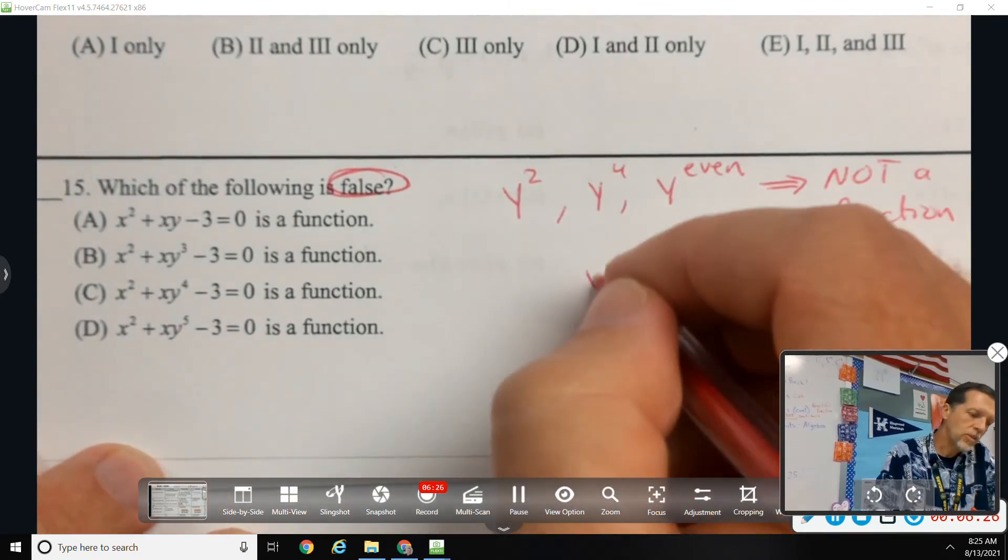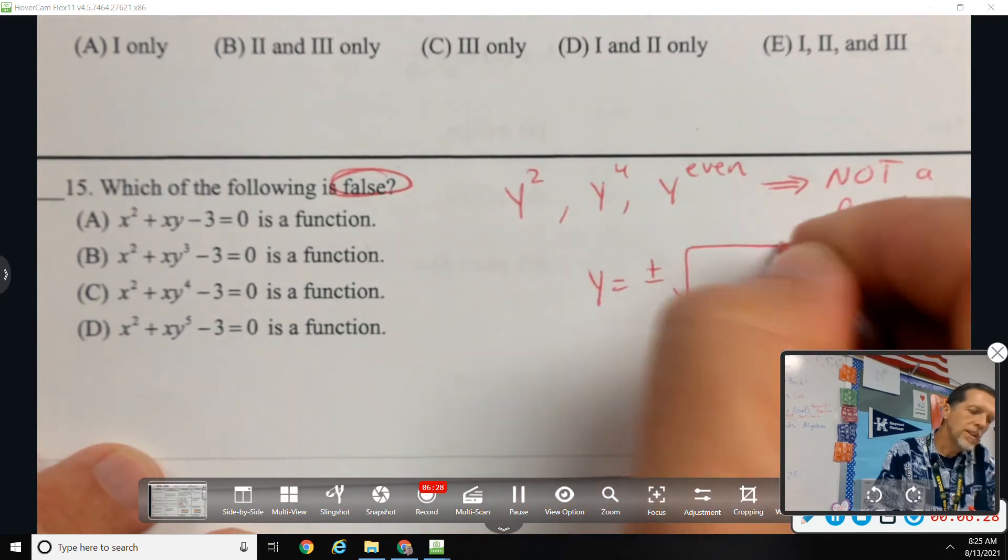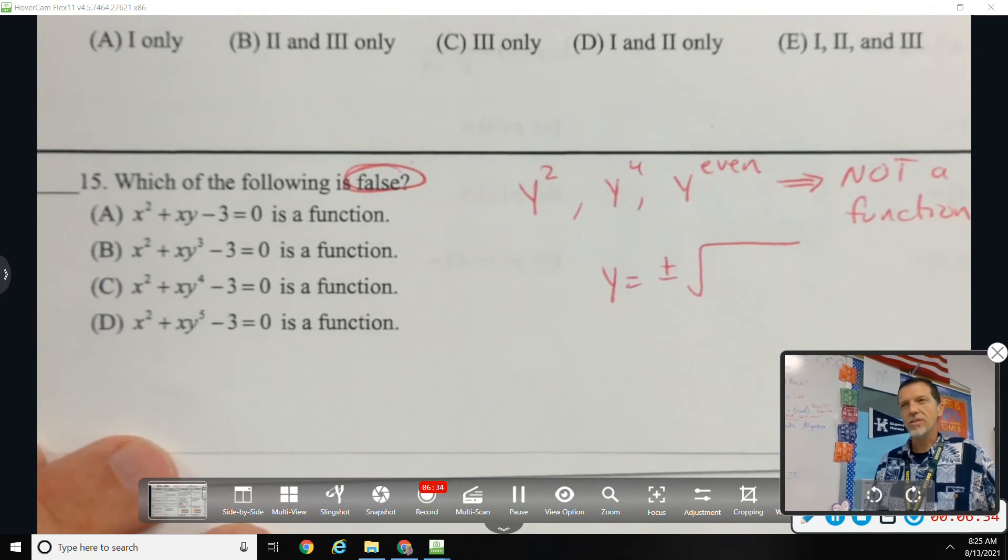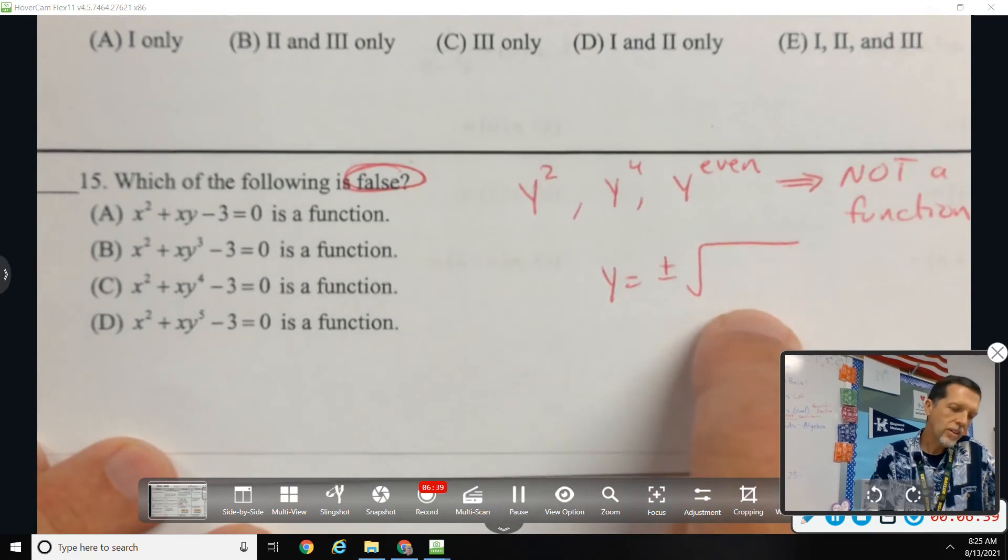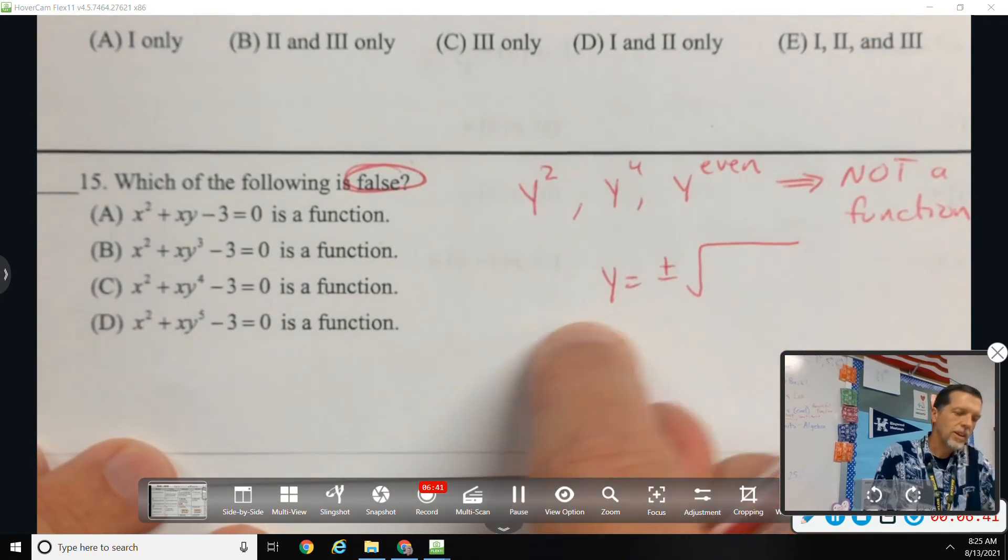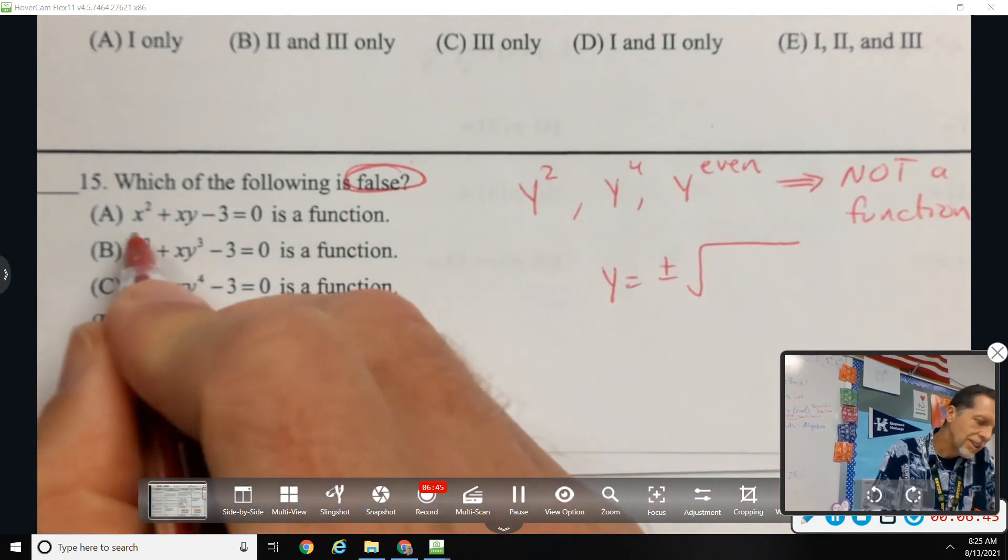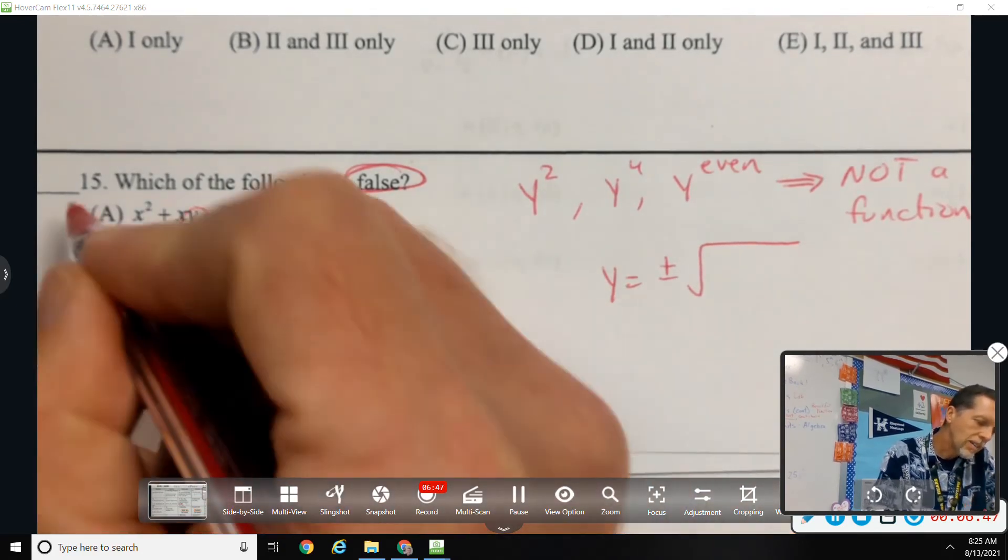So I don't have to solve it all the way out. As soon as I see y squared, it's not a function because eventually we're going to land at plus or minus, which means one x value is giving me two y values and that doesn't work. So a looks okay because there's only one y. Y cubed is good.